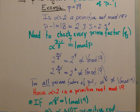For our other prime factor 3, we have 2 to the power of (19 minus 1) over 3, which equals 2 to the 6. This is also not congruent to 1 mod 19.